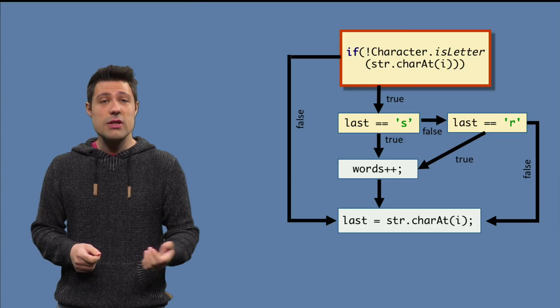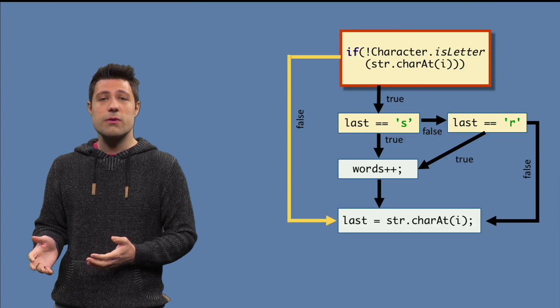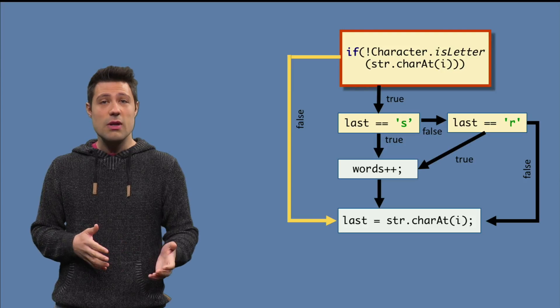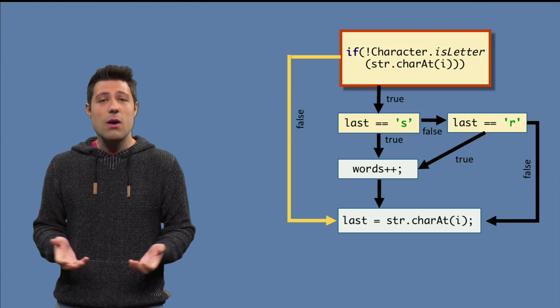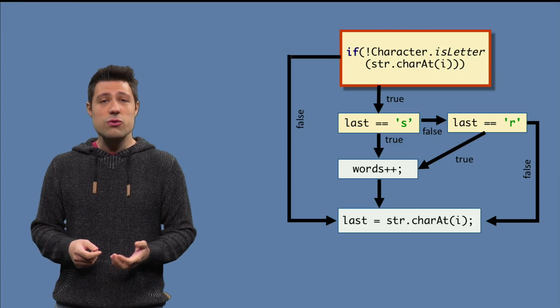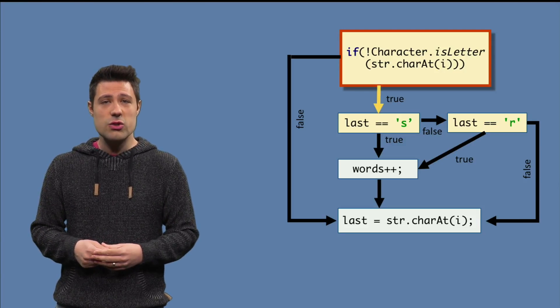If the first condition, the character is letter, is evaluated to false, the program jumps directly to the last equals to string charAt statement. However, if it gets evaluated to true, then the second condition should now be evaluated.